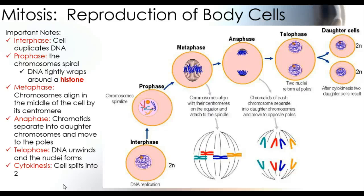The first phase is interphase, and this is where the cell duplicates DNA. We talked about DNA replication in a previous lesson — this is what goes on in interphase. It gets the cell ready to reproduce additional body cells.